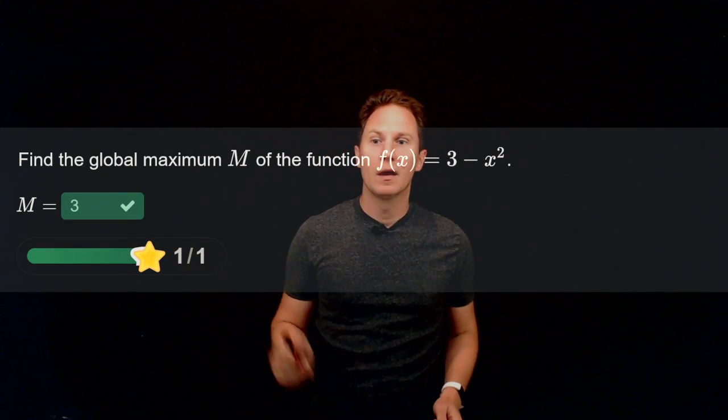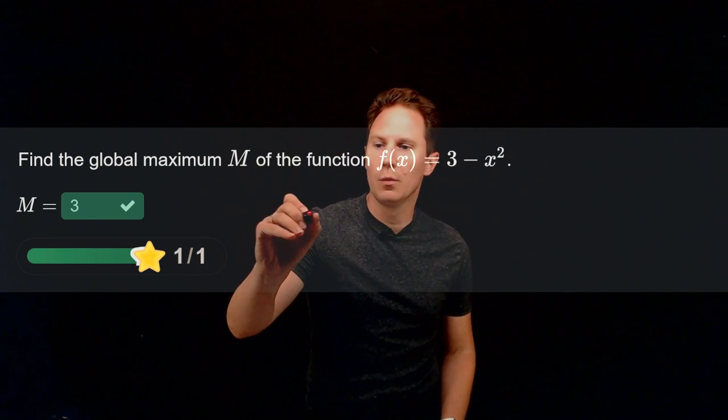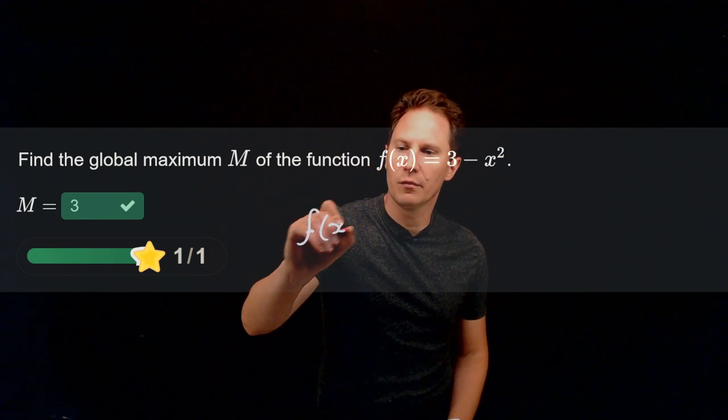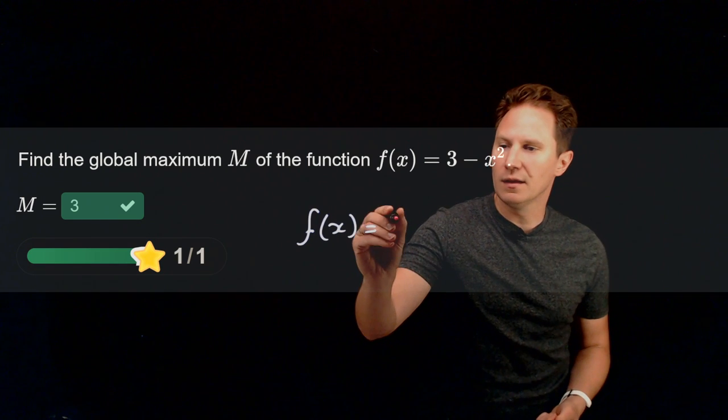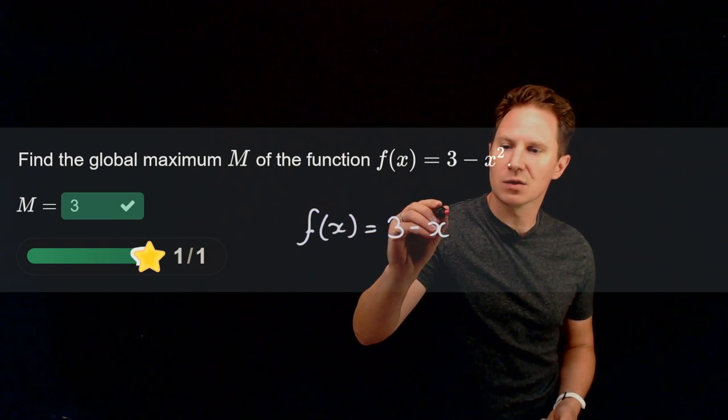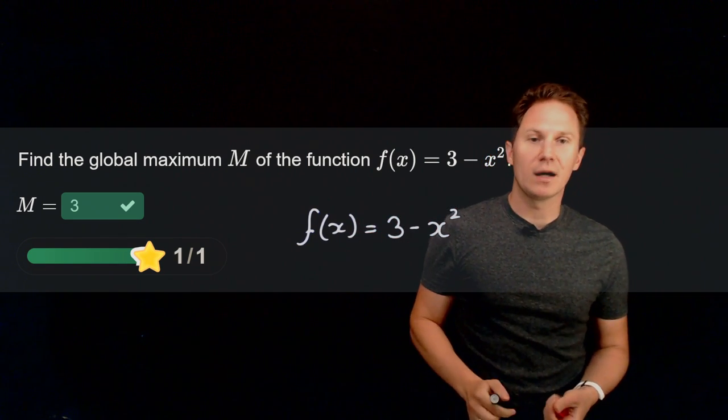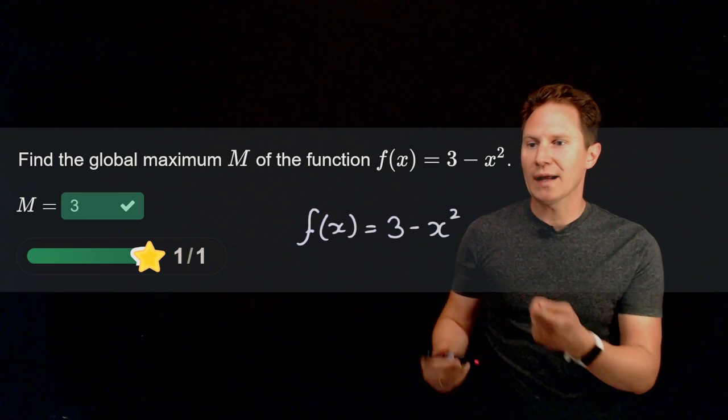Hope you paused it and have inputted 3 for the global maximum. You can find that by realizing that this function 3 minus x squared has x squared, a non-negative quantity, subtracted from 3.